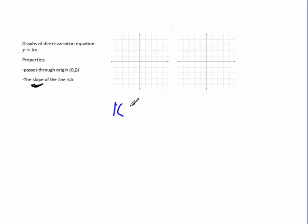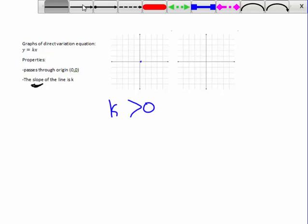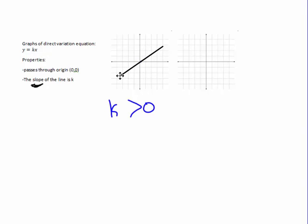So, if k is bigger than 0 or positive, if k is positive, then it's going to go through that, through the origin. And if it's going through the origin, then it's going to have a positive slope. So, it'll look something like that.